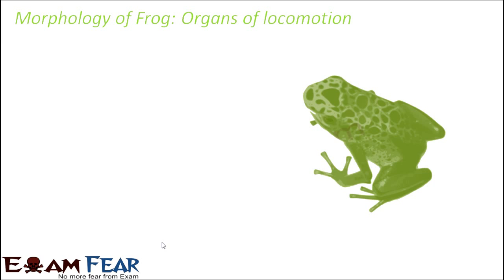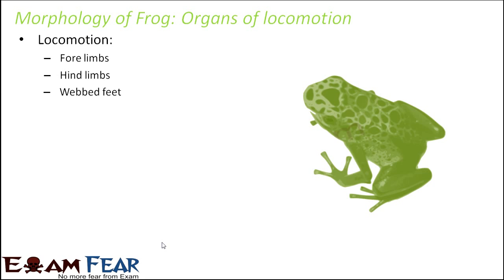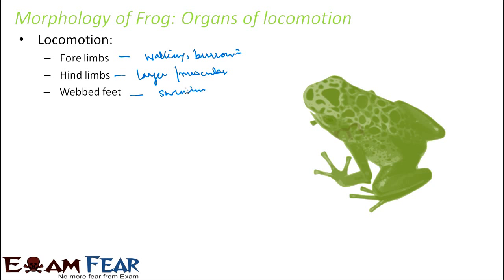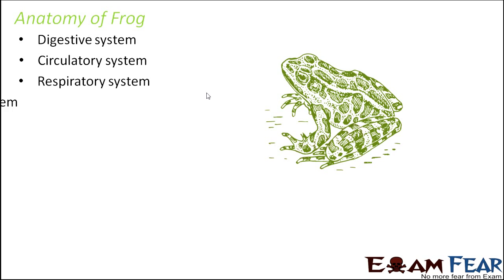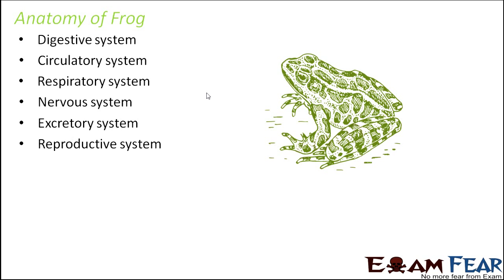To summarize locomotion: forelimbs help in walking and burrowing; hindlimbs are larger and more muscular, helping in hopping and jumping; webbed feet help in swimming. With this, we end our discussion on the morphology of frog, covering all external features. Now let us talk about the anatomy of frog — the life processes taking place inside the body. We will specifically discuss the digestive system, circulatory system, respiratory system, nervous system, excretory system, and reproductive system.